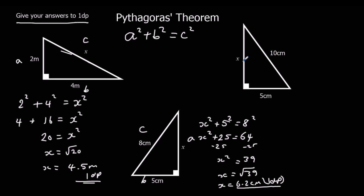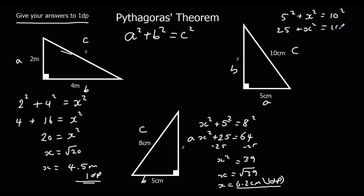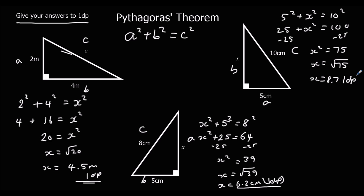Finally, the long side is C and these two are A and B. So 5 squared plus x squared equals 10 squared: 25 plus x squared equals 100. Take away 25: x squared equals 75. Then x is the square root of 75. Typing that into the calculator gives 8.7 to 1 d.p. So 8.7 centimeters to 1 d.p.